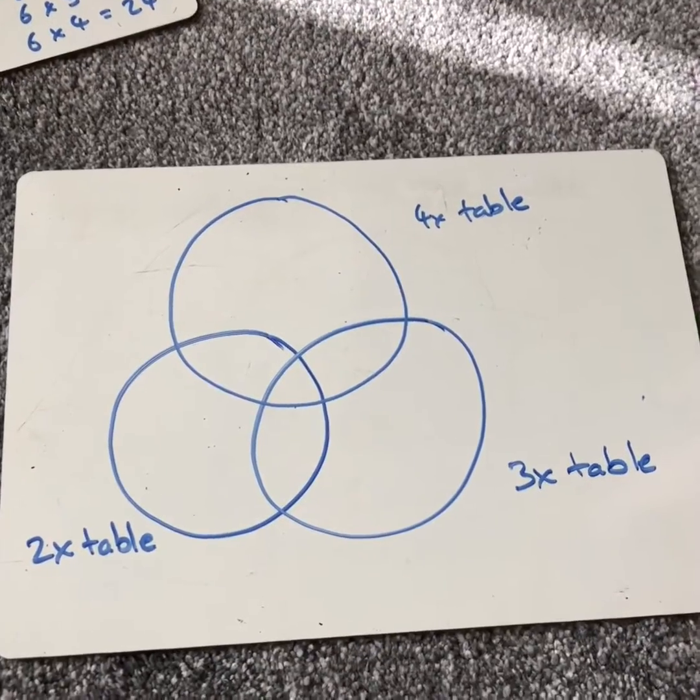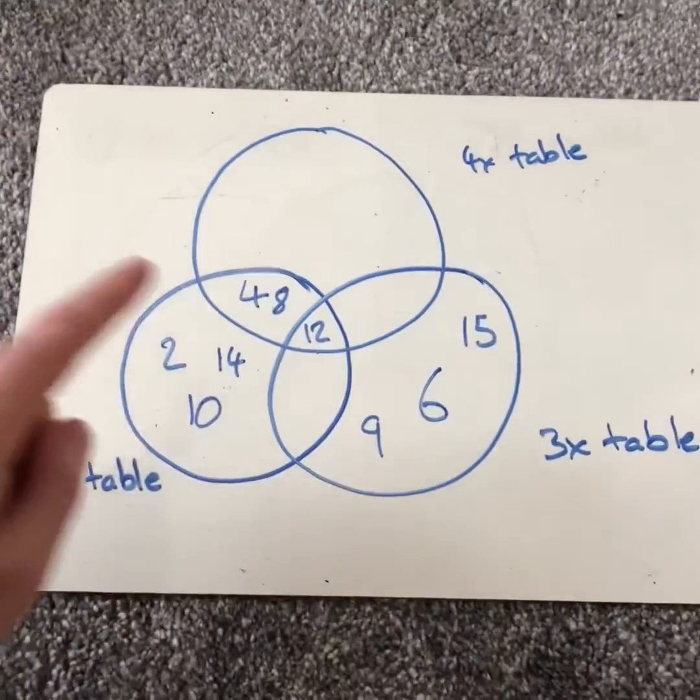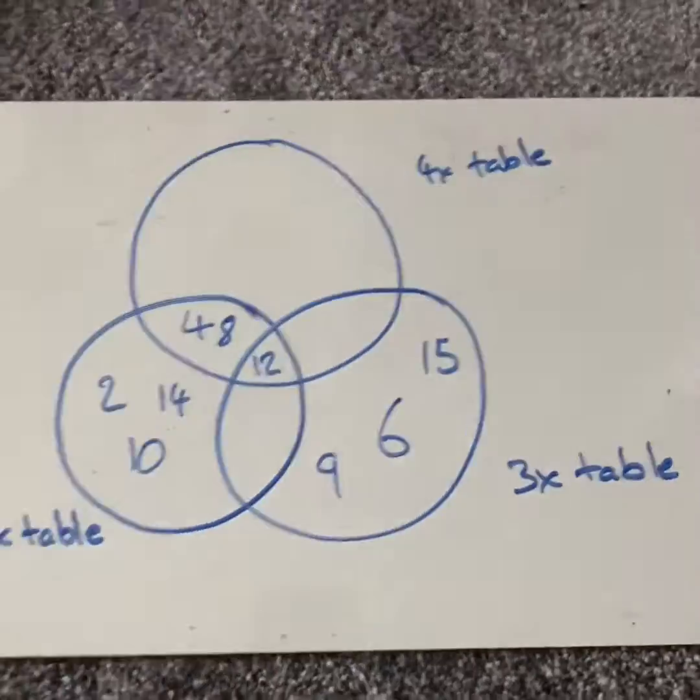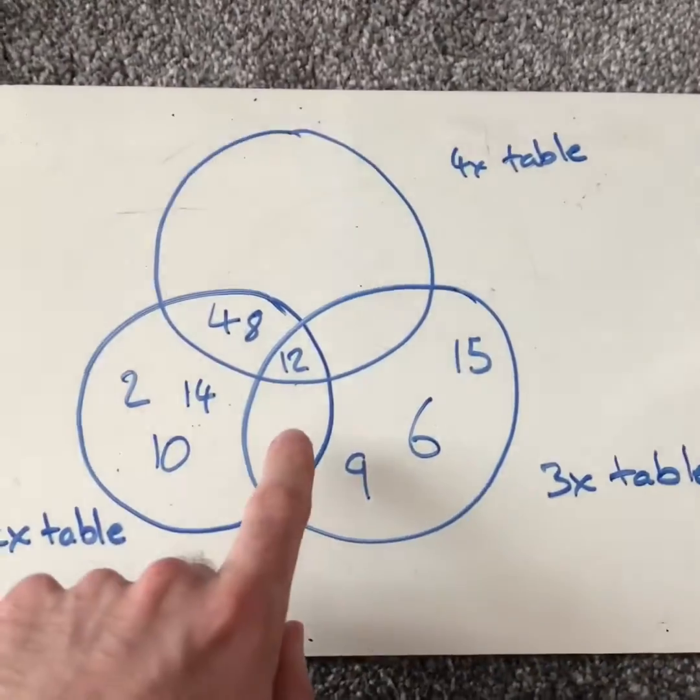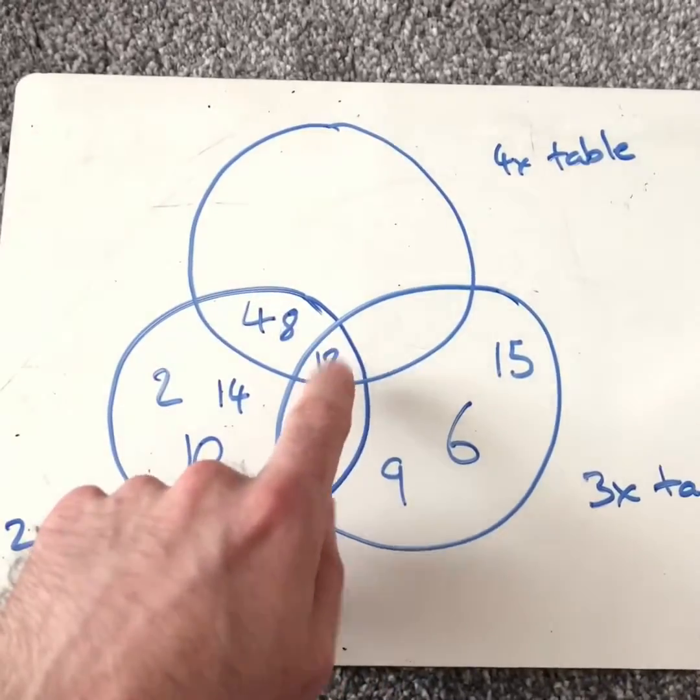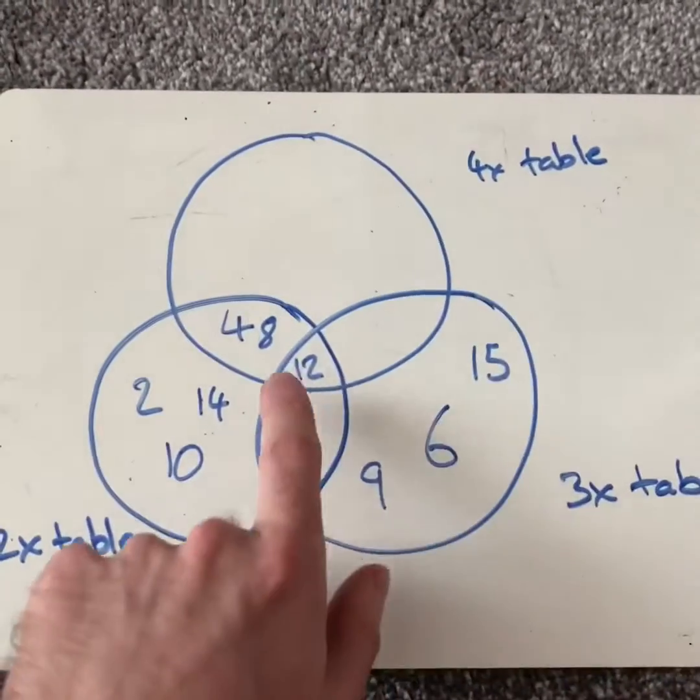Now you can explore any times tables that you know or that you're working on at the moment. But if you want a real challenge, how about trying this? So we'd have two, three and four times table in the two and the four, in the three and the four, in the three and the two. And this bit in the middle is for the two, the four and the three times table. It's a real challenge to do that, and you might need to make it quite big as well to fit in all your numbers. But it is fascinating when you see the results at the end and all the links between the tables.